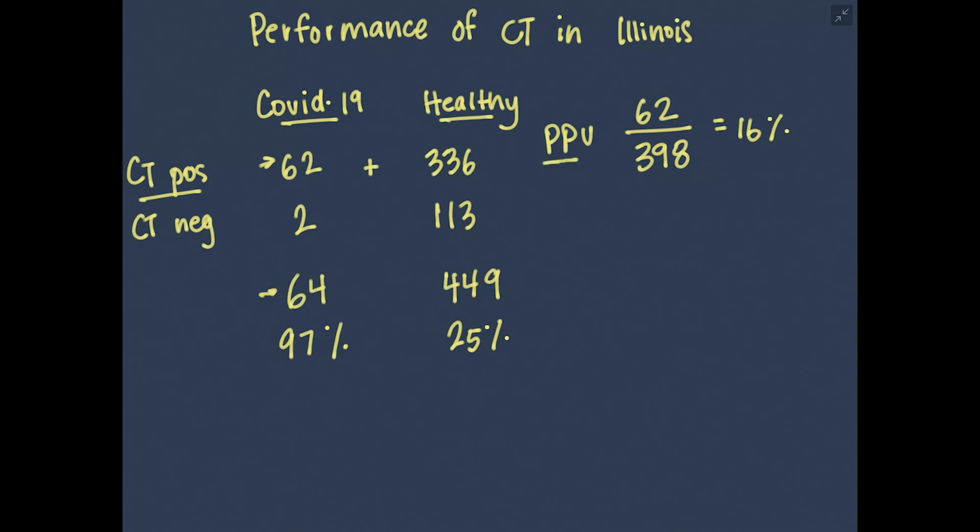Another way to look at positive predictive value is to take 1 minus that number, so 1 minus positive predictive value, and in this case, it's 84%. So 84% of patients who we call positive by CT will go on to have a negative PCR. And negative predictive value, so in this case, we want to add up 113 plus 2, and that comes out to 115, and how many of those were actually negative? 113, and the negative predictive value goes up to 98%. Okay, so it goes up to 98%, and if you remember on the study in China, it was 83%.